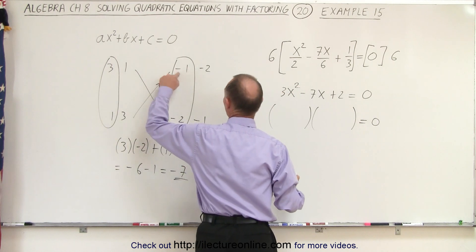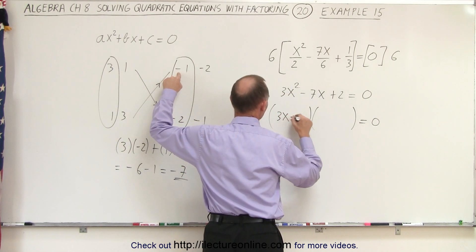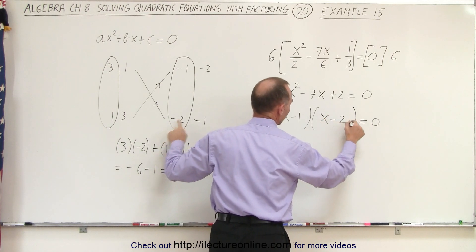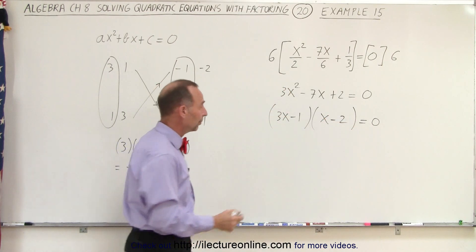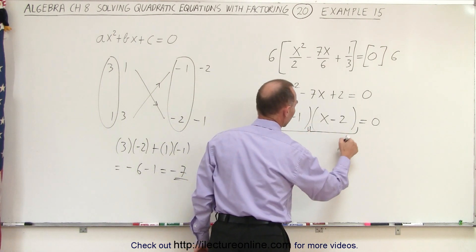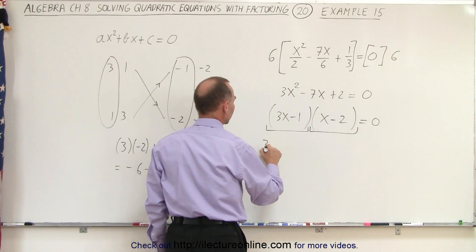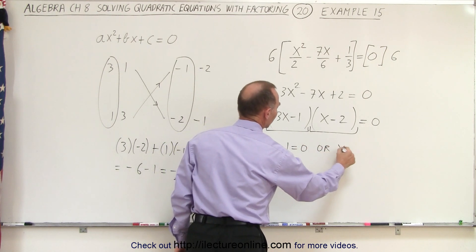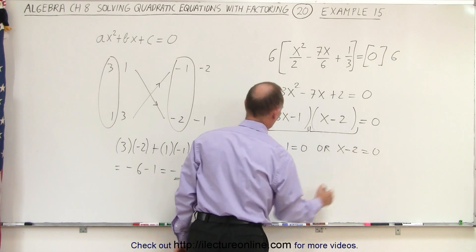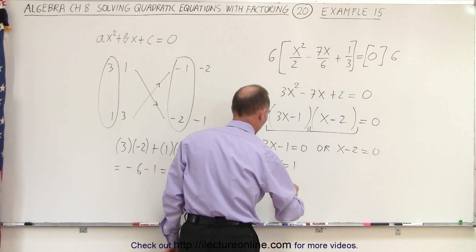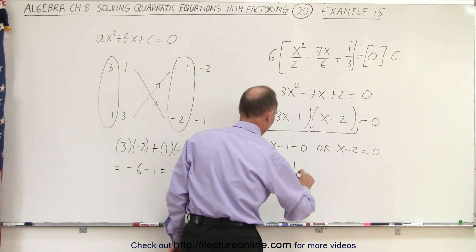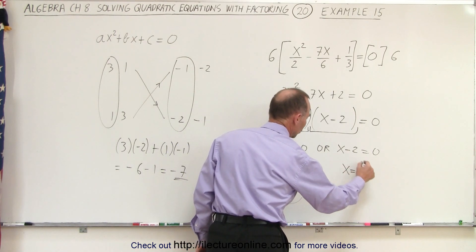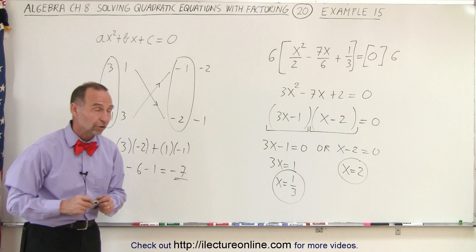Which means that this can then be factored as 3x minus 1 and x minus 2. And then, of course, the last step: we realize that we're multiplying two binomials together and get 0, which means that either 3x minus 1 equals 0 or x minus 2 equals 0. Which means that 3x equals 1, or x equals 1 third as one possible solution. And here, x equals 2 as the other possible solution.